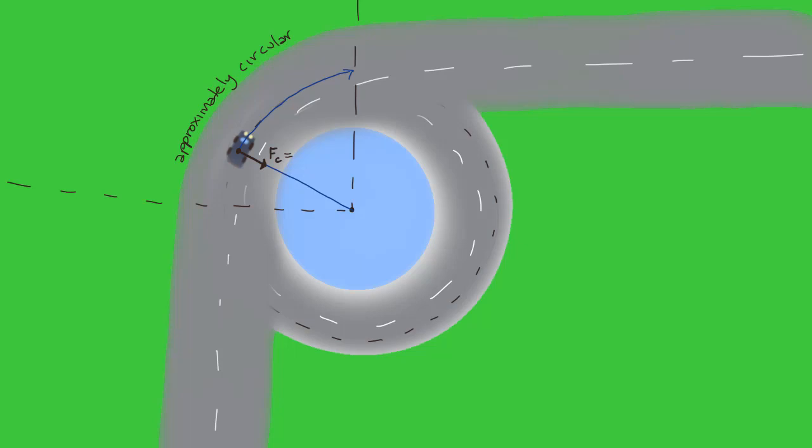Now at some point, friction won't be strong enough to oppose the applied force and the car will start sliding. This occurs at the maximum friction force. The maximum friction force dictates the fastest speed a car can travel around a bend.